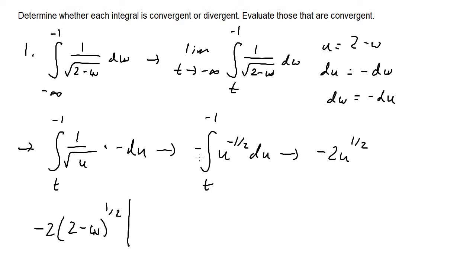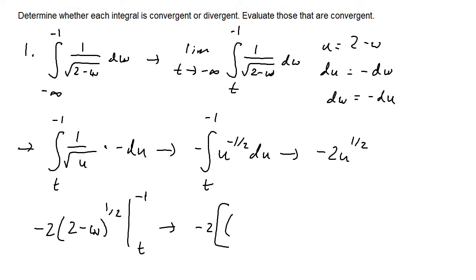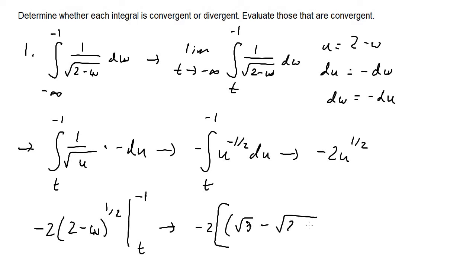With the negative outside, replacing u back gives us negative two times the square root of two minus w, evaluated from t to negative one. Plugging in negative one: two minus negative one equals three, giving square root of three. Plugging in t gives square root of two minus t.